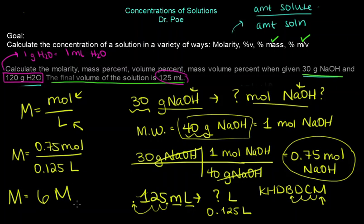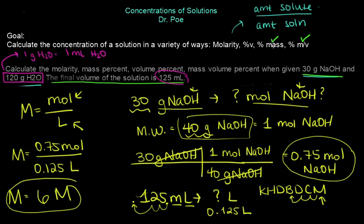The answer is 6 molar — written as 6 M, where the capital M means molar and is often italicized. So from one problem we were able to solve the concentration four ways: molarity, percent by volume, percent by mass, and percent mass-to-volume.